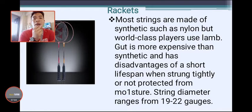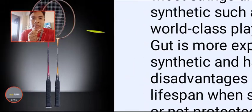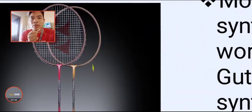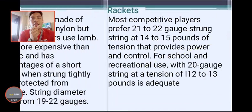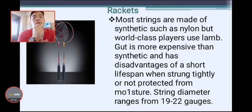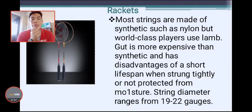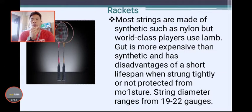Racket strings are most often made of synthetics such as nylon, but world-class players use gut or lamb. Gut is more expensive than synthetic and has the disadvantage of a short lifespan when strung tightly or not protected from moisture. String diameter ranges from 19 to 22 gauge.